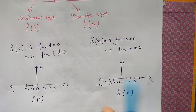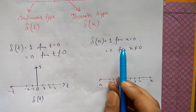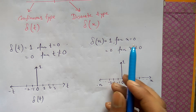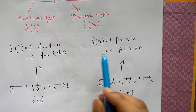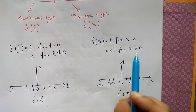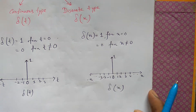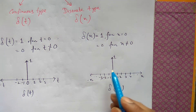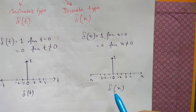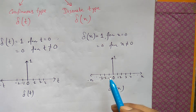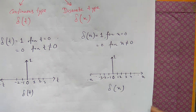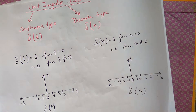Similarly, δ(n) is 1 for n equal to 0, and is 0 for n not equal to 0. That means when the value of discrete time is 0 the value is 1, and for other values of n the value of δ(n) is 0. That is the discrete type unit impulse function.